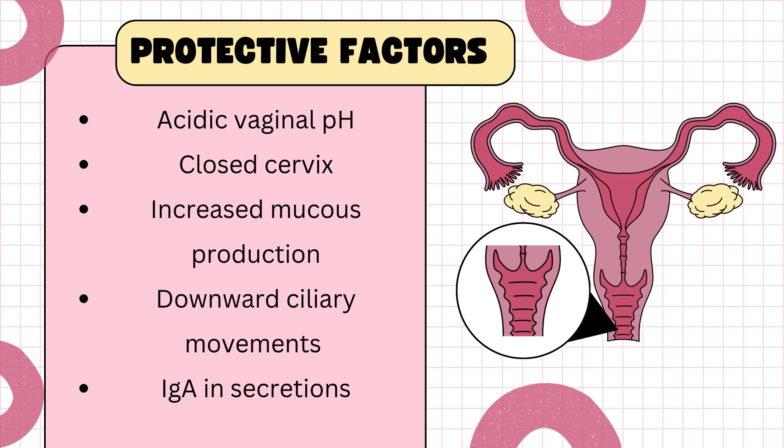The normal healthy vaginal flora particularly contains a lot of lactobacilli, and they provide a barrier against harmful microbes by competing for nutrients and adhering to the vaginal epithelium. Apart from that, there is mucosal immunity which includes immunoglobulins and cytokines, and they help in recognizing and fighting off pathogens.